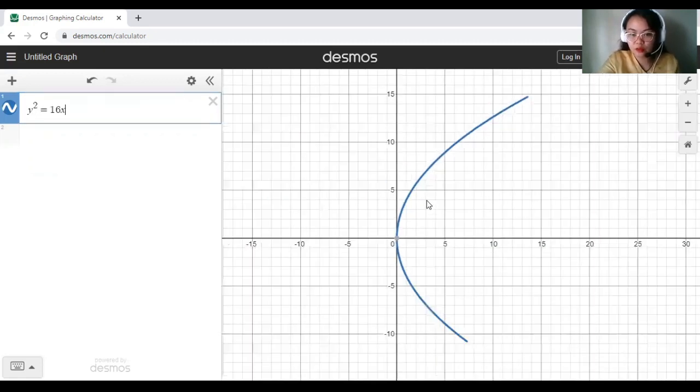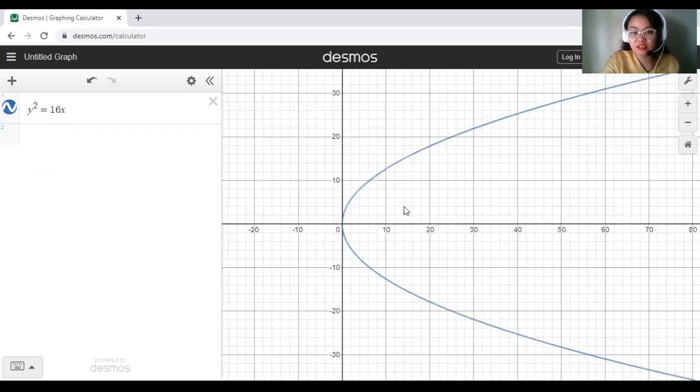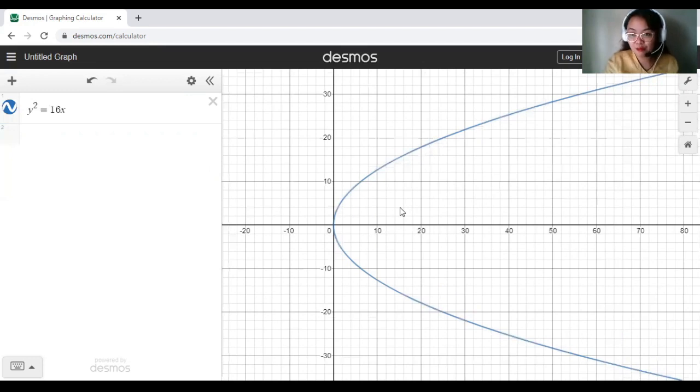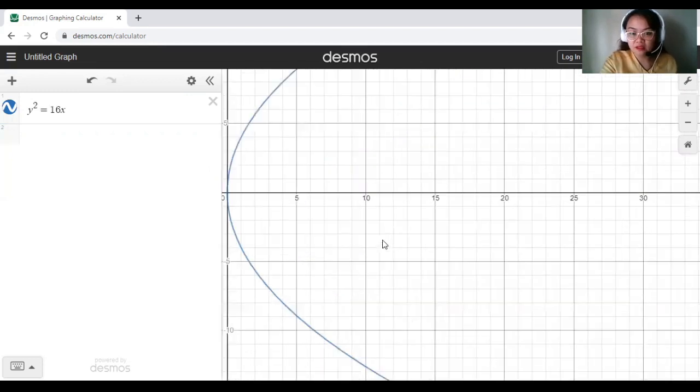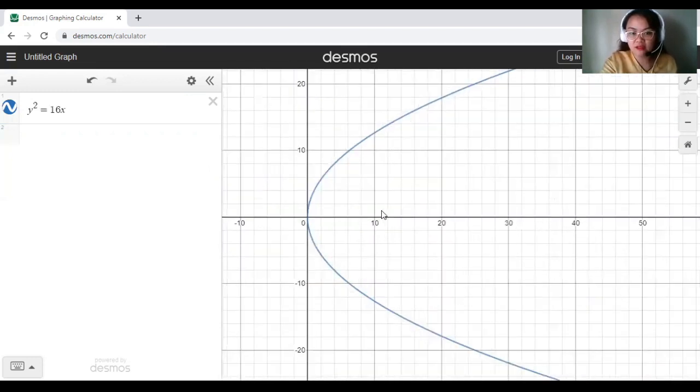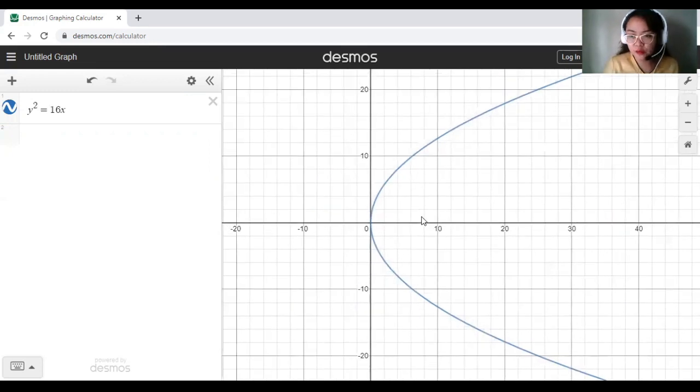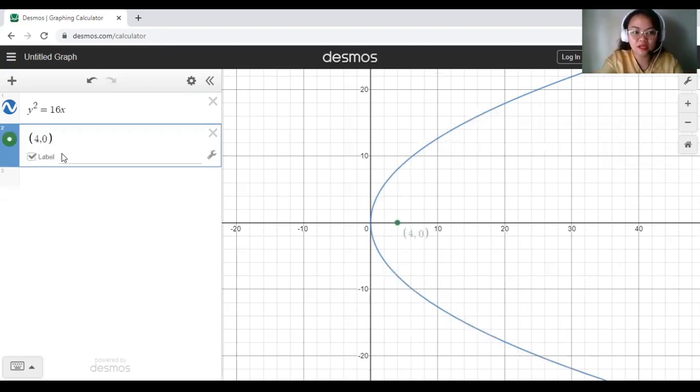You could zoom it out or zoom it in to be able to see the parts properly. Let me just fix that. If I would be getting the focus of my parabola, then the focus would be found here at point 4. We will just type in the coordinates of the focus. It's a parabola facing to the right. That means we have 4, 0 as our focus. Check the label and type in focus.